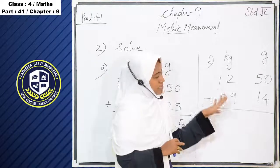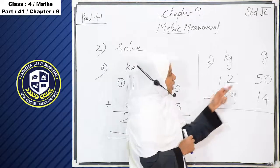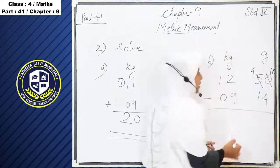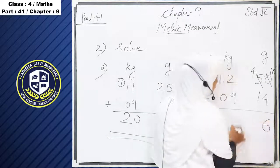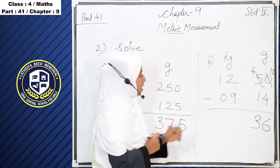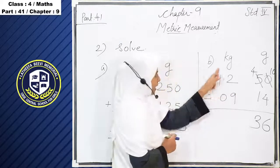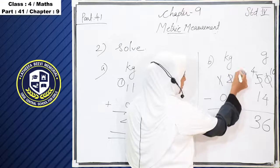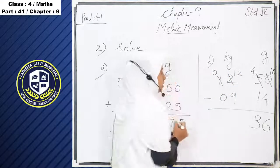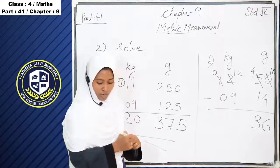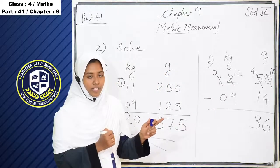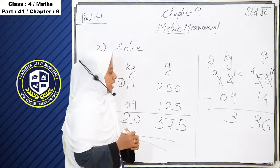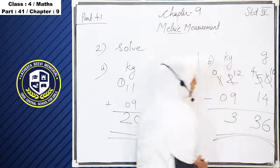So next is subtraction. First we subtract the gram portions: 0 minus 4 — we cannot subtract, so 0 becomes 10 and we borrow 1, making 5 become 4. So 10 minus 4 is 6, and 4 minus 1 is 3, giving 36 gram. Then for the kilogram portions: 2 minus 9 — we borrow, so 2 becomes 12. 12 minus 9 is 3. So the answer is 3 kilogram 36 gram.